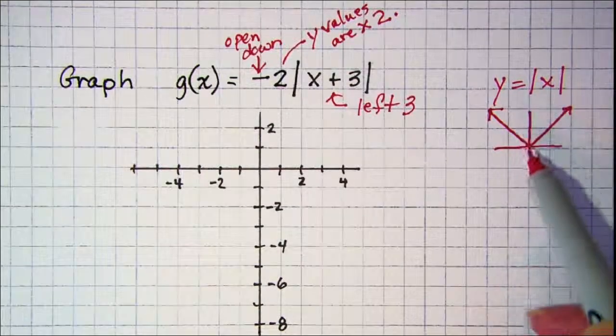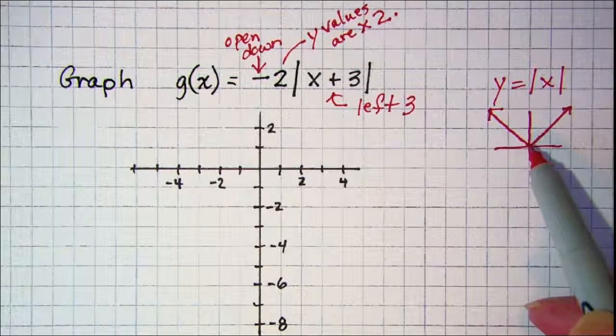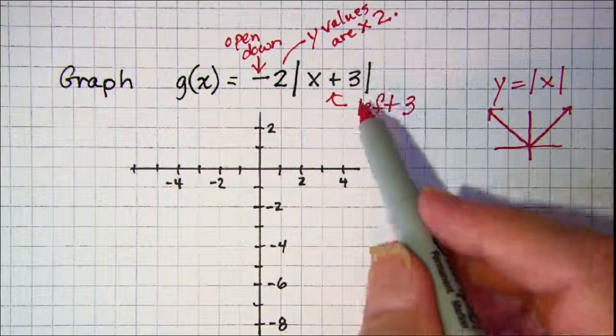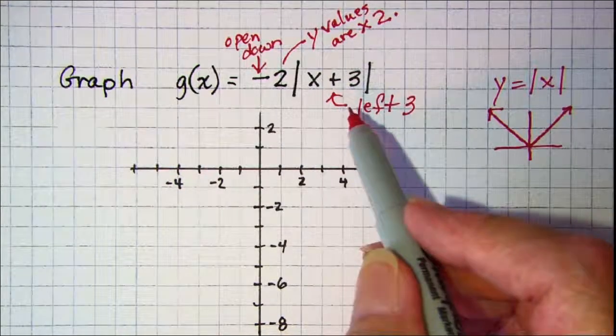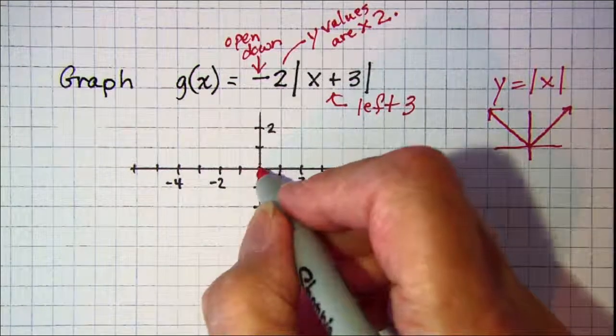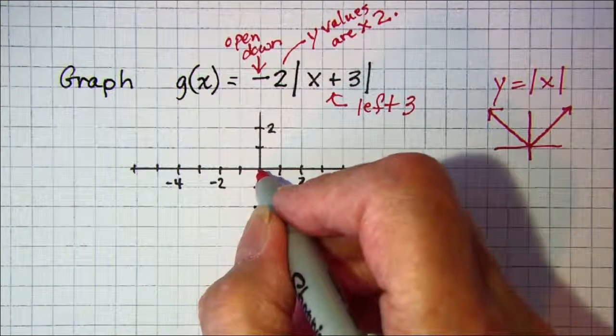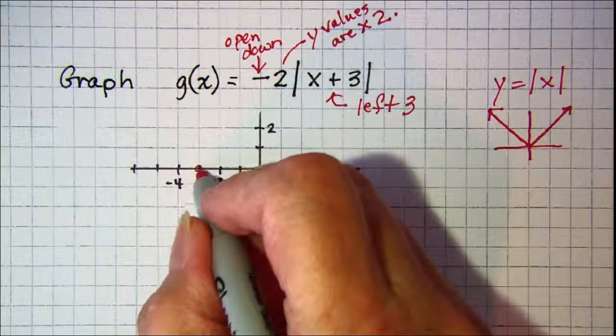So we want to take our vertex and do the moving. Our vertex is going to move left 3. So our vertex, instead of at the origin, will be at negative 3.